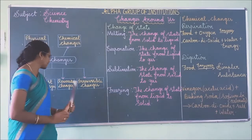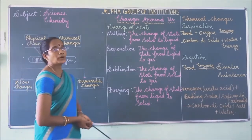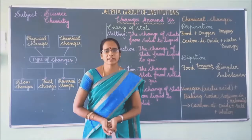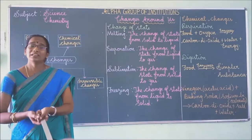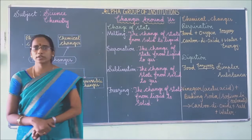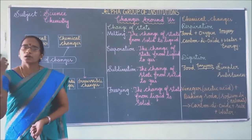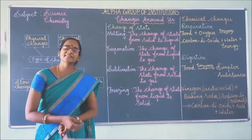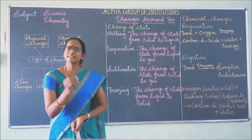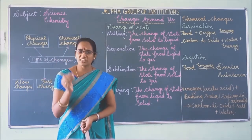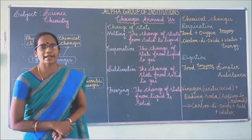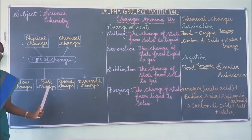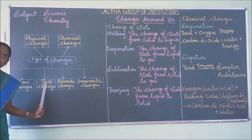Examples of fast changes are: burning of paper, bursting of crackers, lighting a match strip, eruption of volcanoes, landslides, and floods. These are changes that happen immediately within a short duration of time. Fast changes means: the changes which take place in a short duration of time are called fast changes.